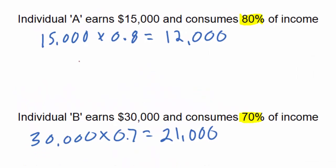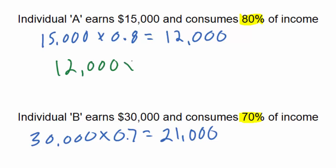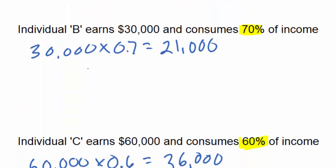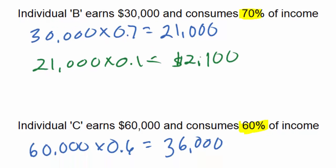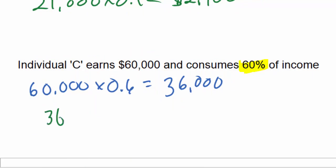Let's start with Individual A. Individual A spends $12,000 on goods and services and must pay a 10% tax on that consumption. Multiplying $12,000 by 0.1 gives us a tax burden of $1,200 on Individual A. Individual B's tax will be $21,000 times 0.1, which is $2,100. Individual C spends $36,000 on goods and services at a tax rate of 10%, so Individual C will pay $3,600 in taxes.